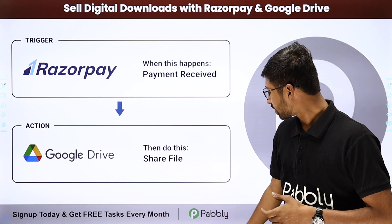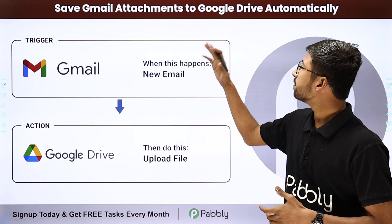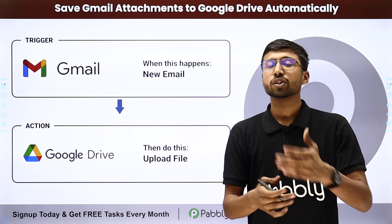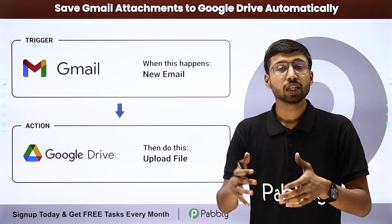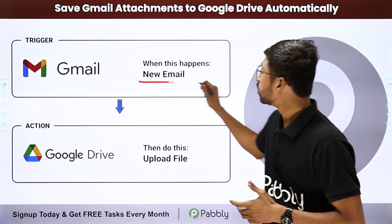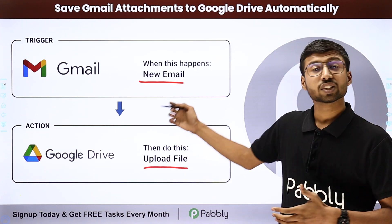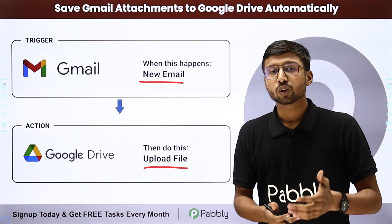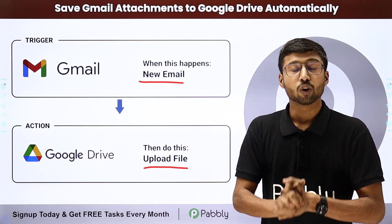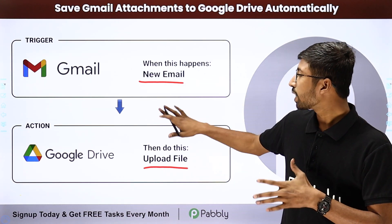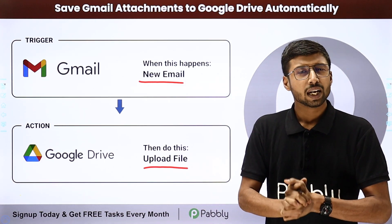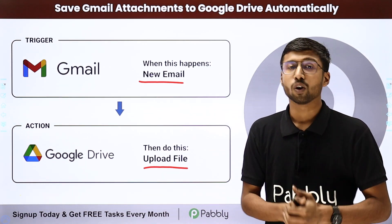The second automation idea — and this is my personal favorite — is how to save Gmail attachments to Google Drive automatically. Using this automation, all attachments you receive in your Gmail account will automatically be uploaded to your Google Drive as a new file. You can eliminate the manual effort of downloading attachments and re-uploading them. You can also add filter conditions to upload only specific files, like PDFs, invoices, or bank statements.